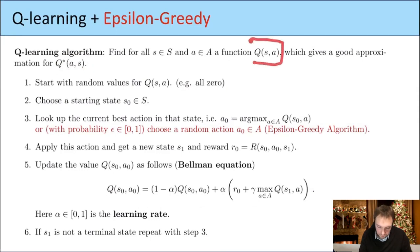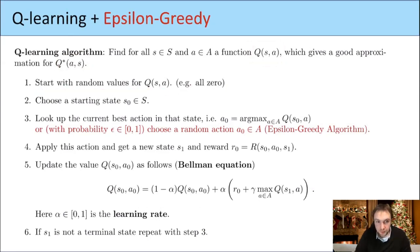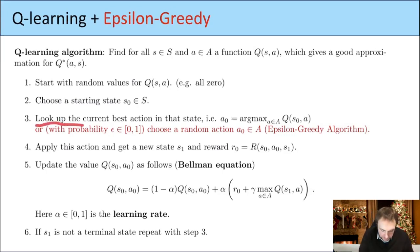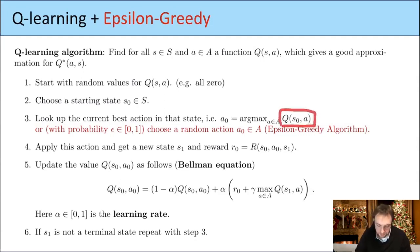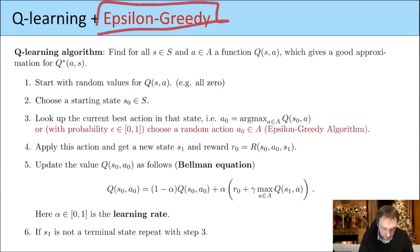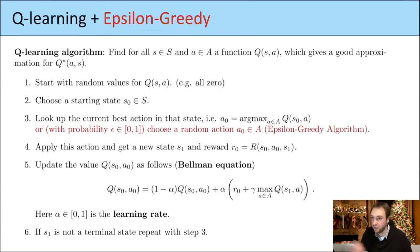Let's recall this algorithm, and then we will do it step by step in this example. The goal is to find an approximation for these Q star values. We start with random values — for example, we set everything to zero. Then we start at some state, look at all possible actions, and go in the direction with the currently highest Q value. At the beginning when all are zero, maybe we just choose one of them randomly.